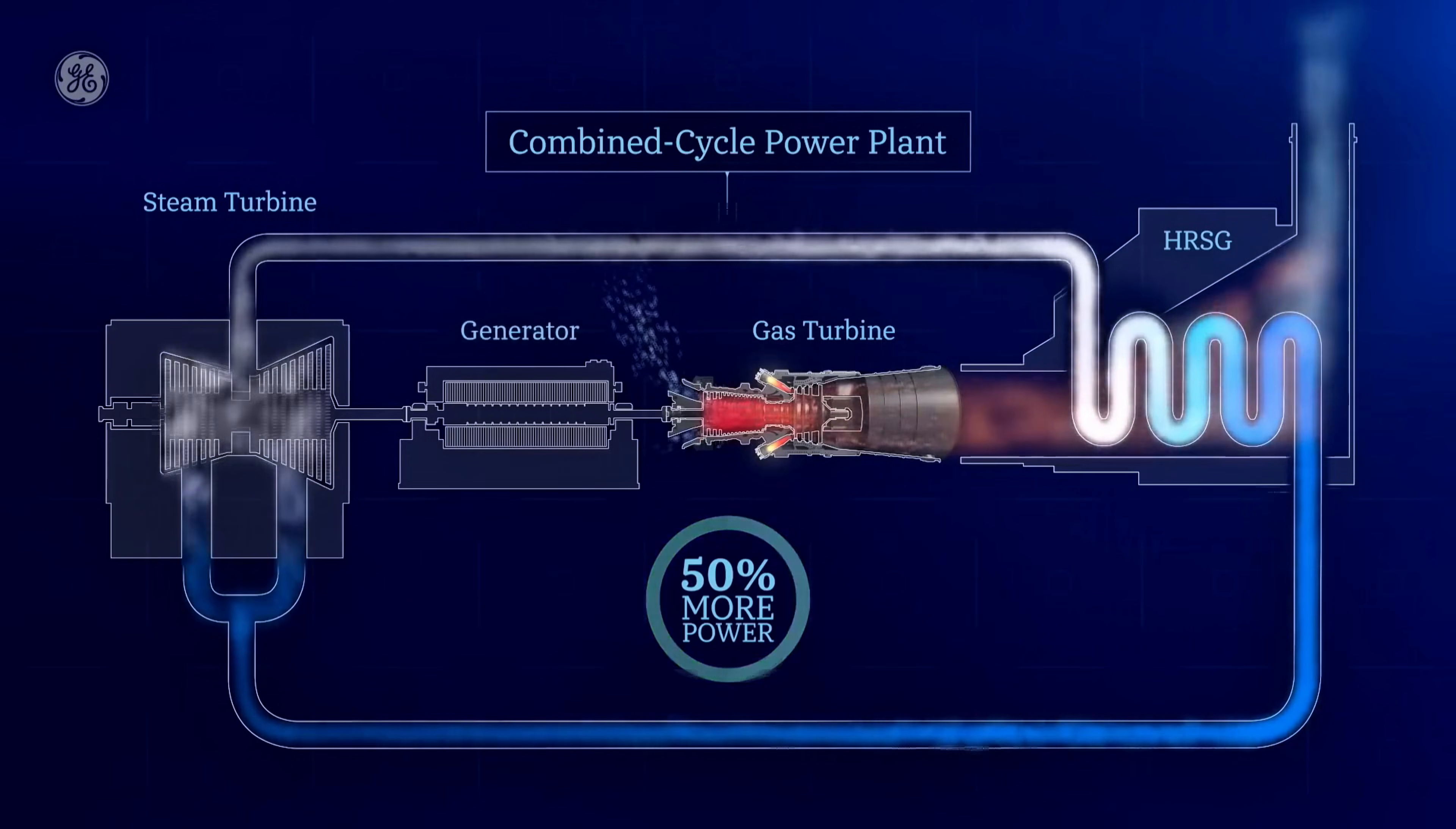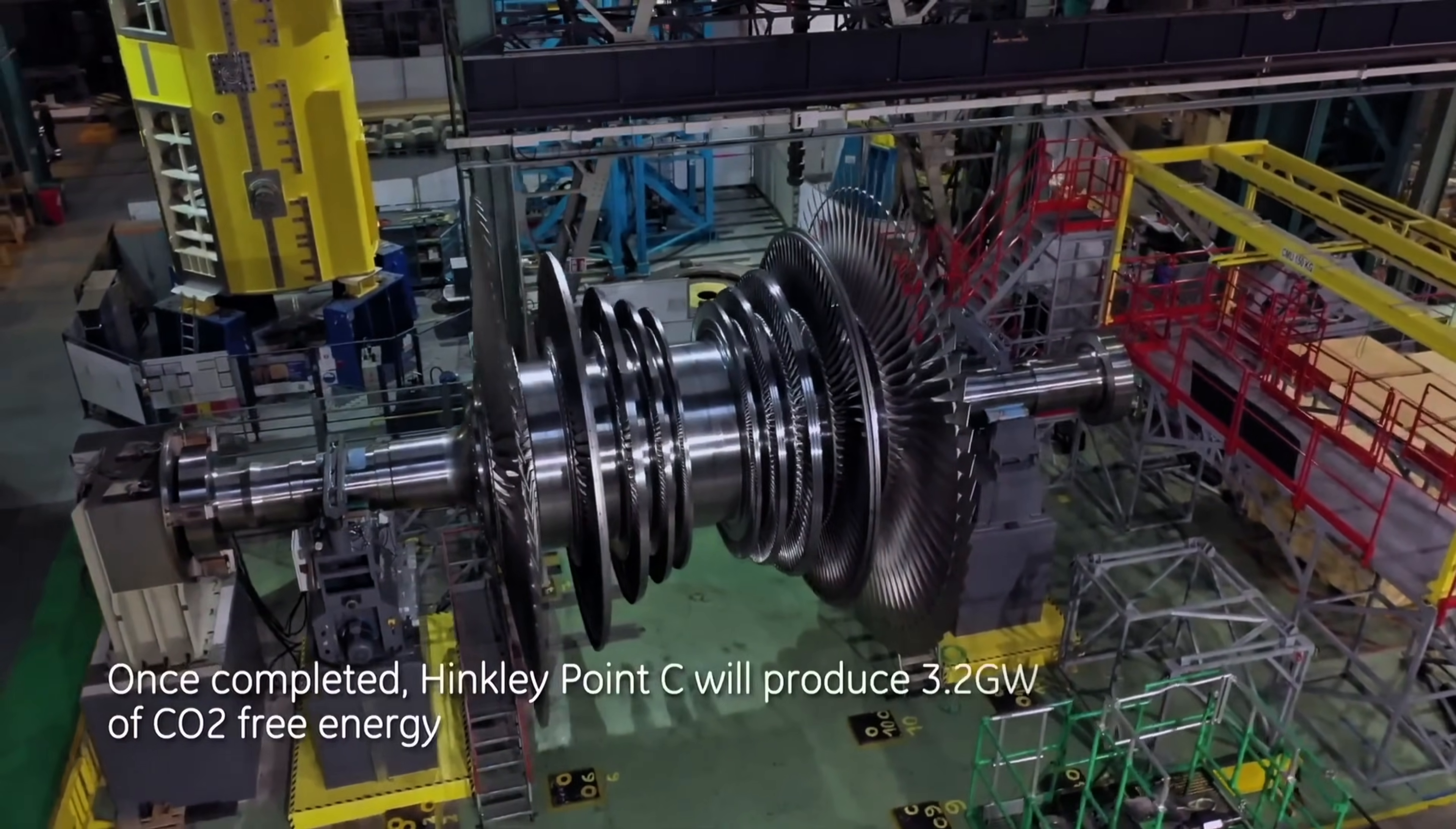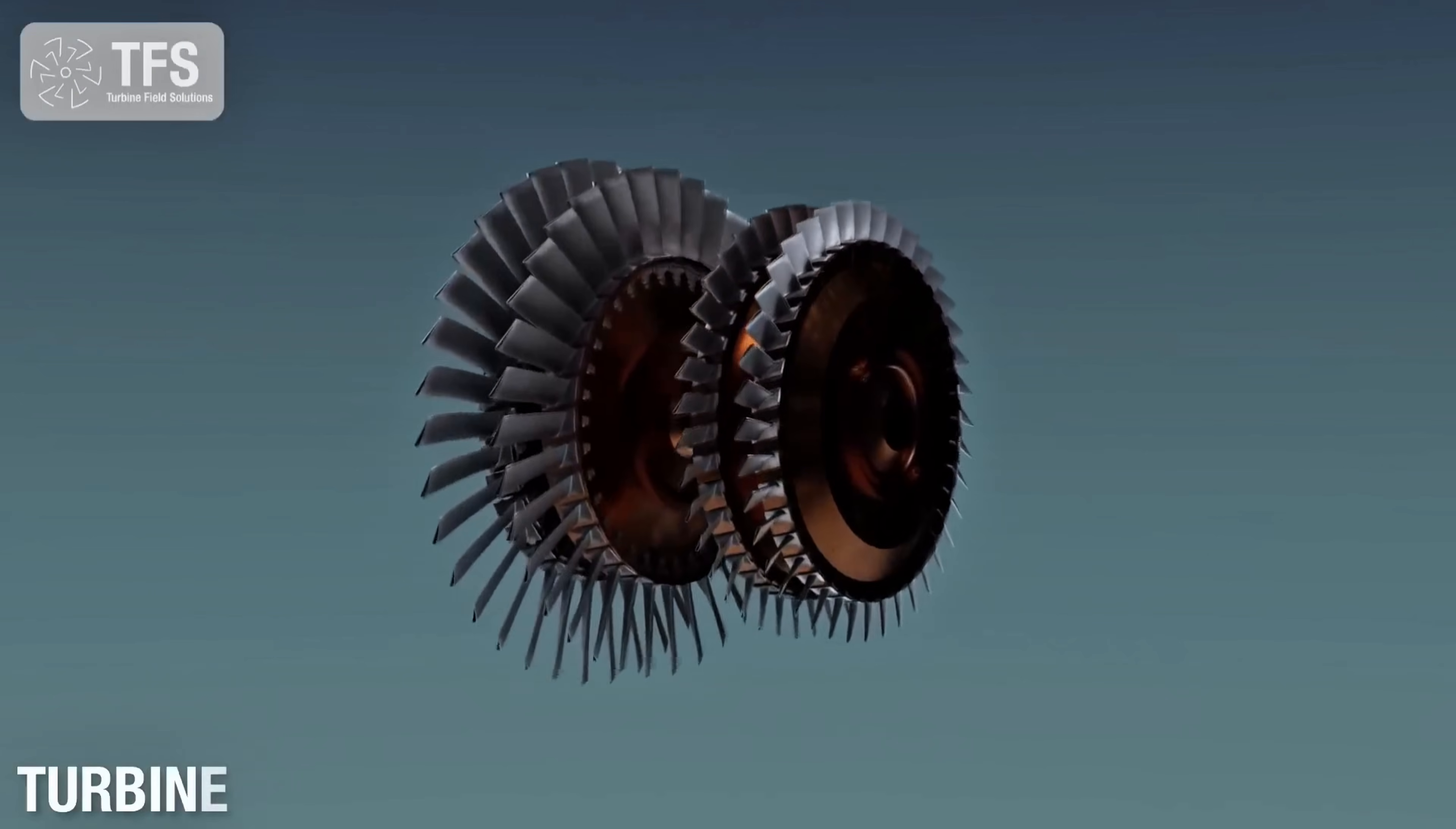In one analysis, an SCO2 cycle delivered about 10 to 15 percentage points more efficiency than a comparable steam cycle. To put it in everyday terms, a power plant that once generated 1000 megawatts might crank out 1200 to 1300 megawatts with supercritical CO2 from the same amount of heat. That's like lighting up a whole extra city with no extra fuel.